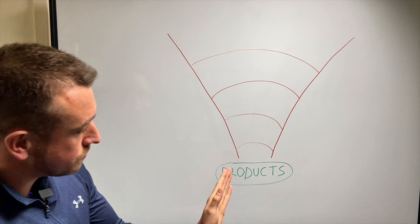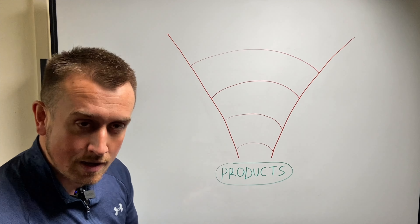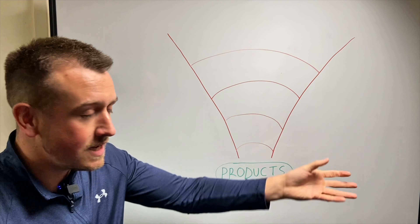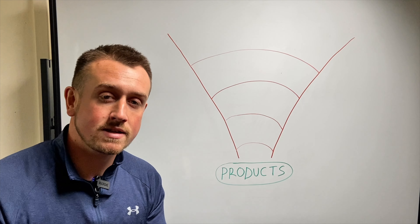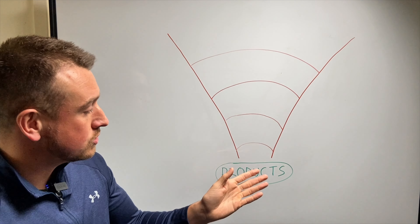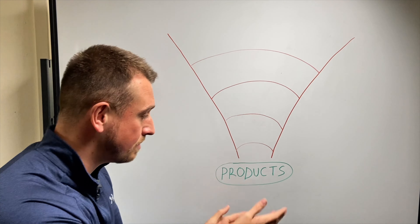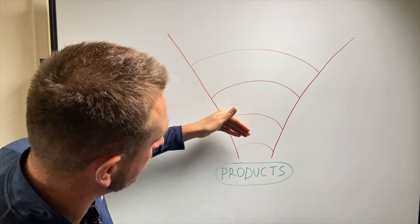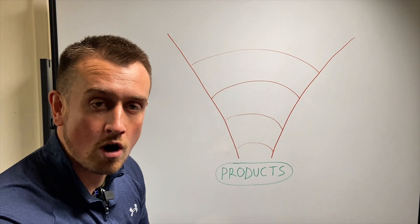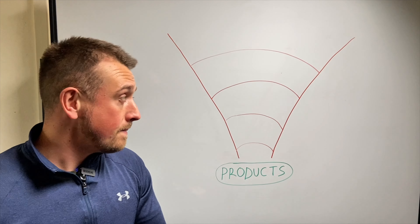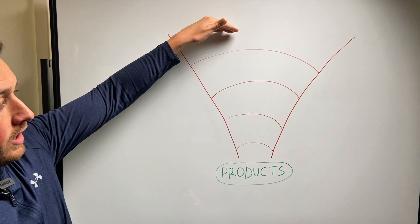What I'm about to show you isn't a theory — this isn't something I've just come up with. This is something I've been doing for years, something that pretty much any Amazon wholesale seller will have been doing to find products for their business. And really at the end of the day it's just a numbers game. As you can see here I've got a funnel — you put stuff in at the top, go through the funnel, and at the bottom we're going to have our profitable wholesale products.